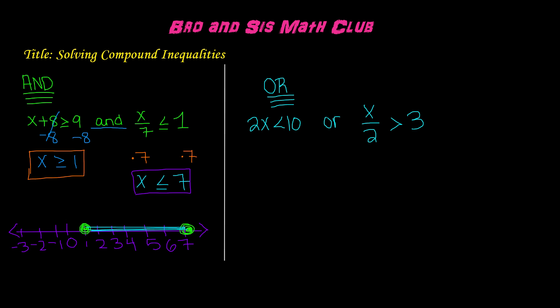Now let's do the 'or' compound inequality. Here we have 2x is less than 10, or x over 2 is greater than 3. In order to get rid of the 2x, we must divide by 2, since the inverse of multiplication is division. The 2s cancel each other out, and we're left with x is less than 5 as our solution.